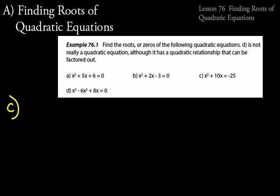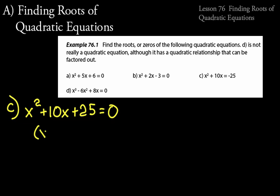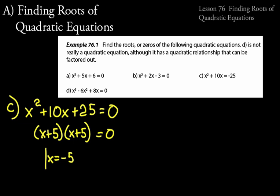Let's move on to C. We have x squared plus 10x equals negative 25. First, we need to get that into standard form — always do that when finding roots. Move the negative 25 over to get x squared plus 10x plus 25 equals zero. Then factor into two binomials: x plus 5 times x plus 5 equals zero, or x plus 5 quantity squared equals zero. There's only one solution here: x equals negative 5. Both binomials give the same answer because negative 5 plus 5 equals zero.